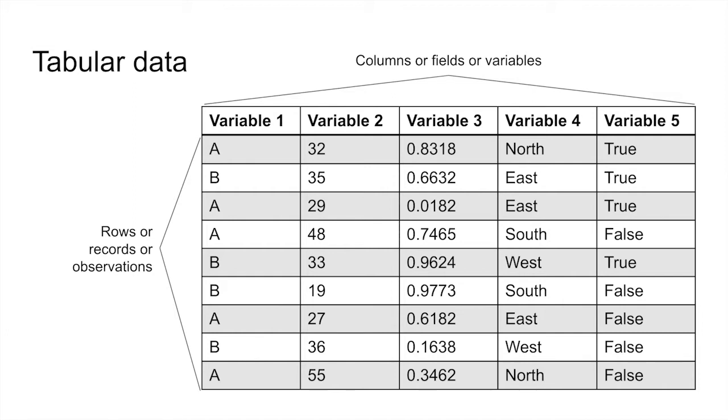Tabular data includes columns, which are also called fields or variables, and rows, which are also called records or observations. The intersection of a row and column is often called a cell, and inside the cell is a data value that represents the value of that variable for that particular record.